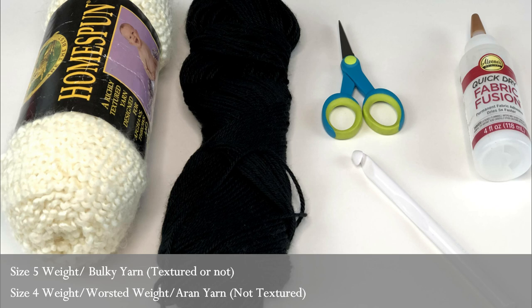In the example that I am using today, I am using a Caron Simply Soft yarn. If you want to know the exact colors that I am using in this scarf, I will put those in the notes section below this video for you to refer to. You will also need a crochet hook size P or 11 and a half millimeter, a pair of scissors, and optional is the fabric glue.